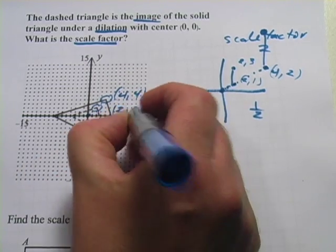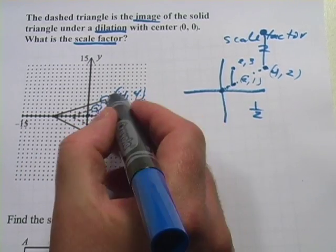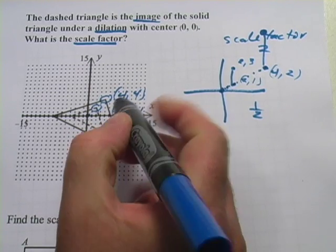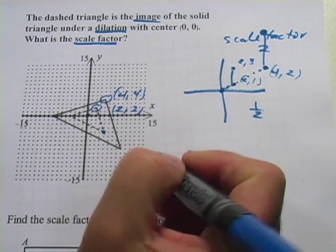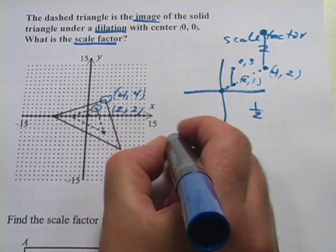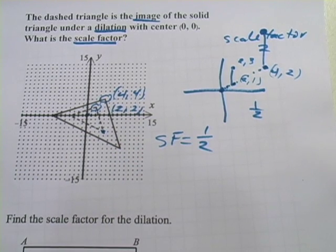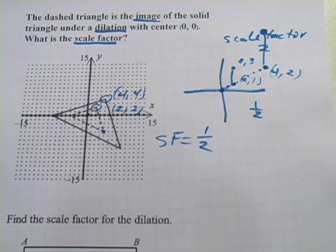And this point that corresponds to that point on the original is (2,2). So the question is, what do you multiply (4,4) by to get (2,2)? Well, you can see it's 1/2. 2 is half of 4. So the scale factor is actually 1/2 on that one, and that's what they're asking for. So that's your answer.